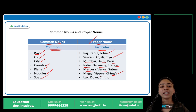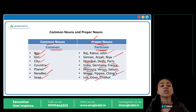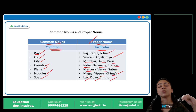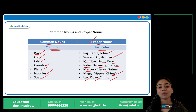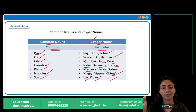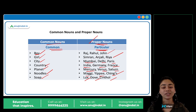Soap is common. Lekin Lux, Dove, Synthol — yeh proper nouns hain. Toh common nouns are common names, names which are the same and common for all. And proper nouns are names which are specific — a specific name, a particular name. So I hope the difference between common and proper nouns is clear.